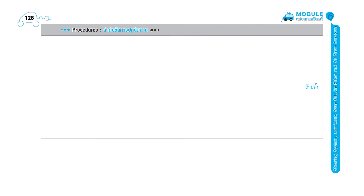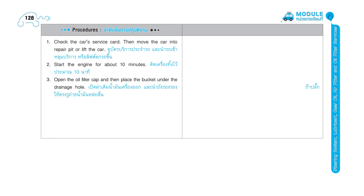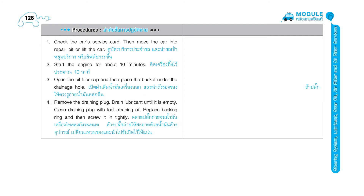Procedures: 1. Check the car's service card, then move the car into repair pit or lift the car. 2. Start the engine for about 10 minutes. 3. Open the oil filler cap and then place the bucket under the drainage hole. 4. Remove the draining plug. Drain lubricant until it is empty. Clean draining plug with tool cleaning oil. Replace backing ring and then screw it tightly.